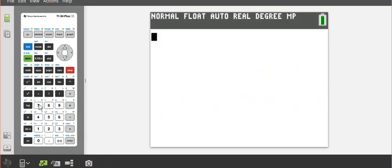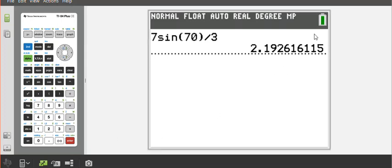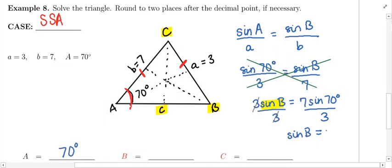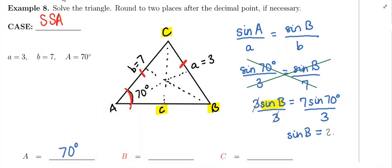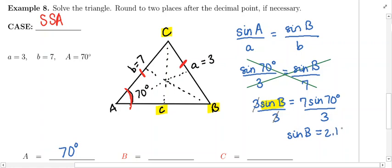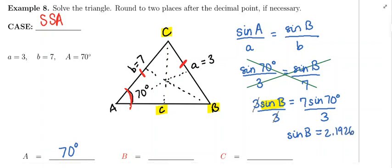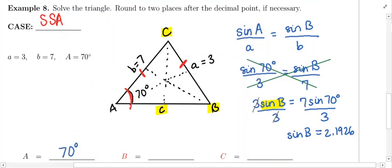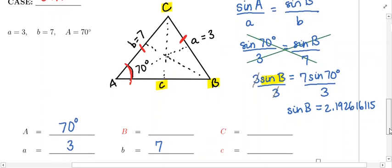We need to go to our calculator and do the sine of 70 degrees divided by 3, and that will give us the sine value for angle B. Let's do this. We're going to make sure you're in degrees, 7 times the sine of 70 degrees divided by 3. I'm going to write this decimal down: 2.19, 2.6, 1.6, 1.15. You need the full decimal expansion for accuracy.